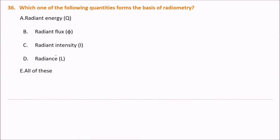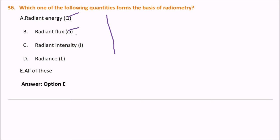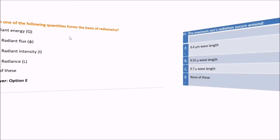Which one of the following quantities forms the basis of radiometry? The answer is all of them: radiant energy, radiant flux, radiant intensity, and radiance — all of these form the basis of radiometry.